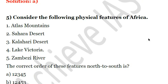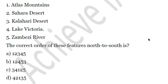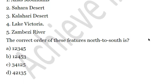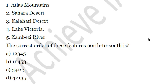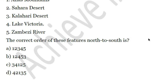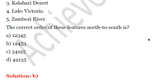Next question: consider the following physical features of Africa and arrange them from north to south. One, Atlas Mountains. Two, Sahara Desert. Three, Kalahari Desert. Four, Lake Victoria. Five, Zambezi River. Atlas Mountains are in the north, followed by the Sahara Desert. After Sahara comes Lake Victoria, then Zambezi River, and the Kalahari Desert is in the extreme south. So the correct order from north to south is 1, 2, 4, 5, 3. The answer is B. Sorry for the earlier mistake.